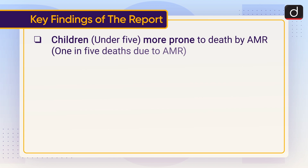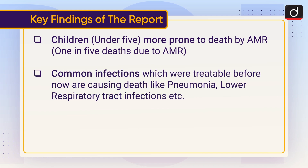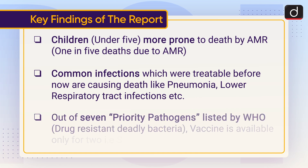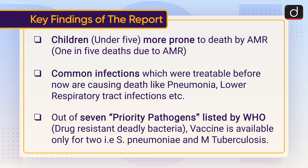Children under 5 are more prone to death by AMR — one in five deaths due to AMR occurs in this age group. Common infections which were treatable before, like pneumonia and lower respiratory tract infections, are now causing deaths. Out of seven priority pathogens listed by WHO — drug-resistant deadly bacteria — a vaccine is available for only two: S. pneumoniae and M. tuberculosis.